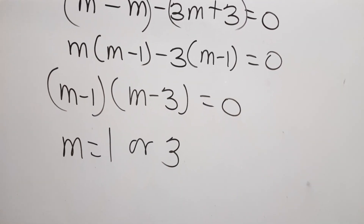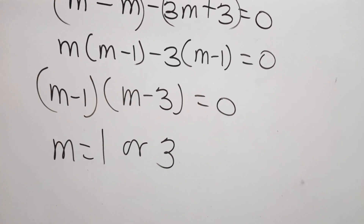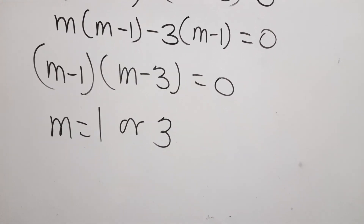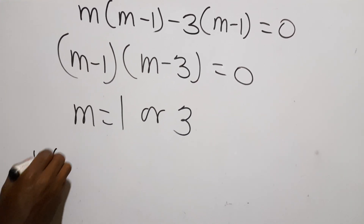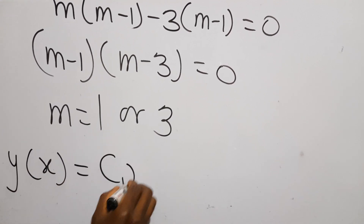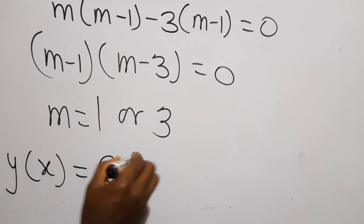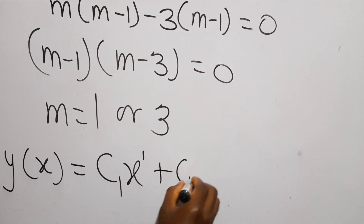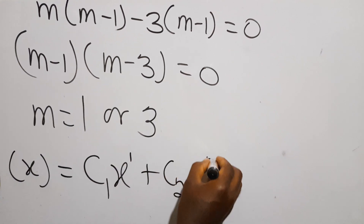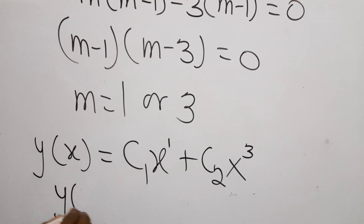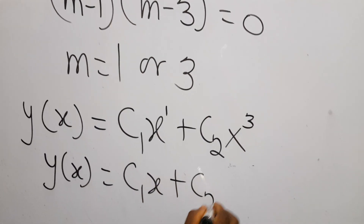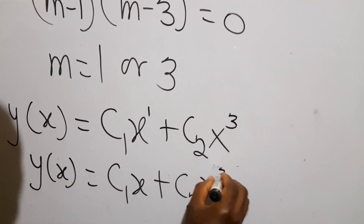Since m equals 1 and m equals 3 are two distinct roots, the general solution to our differential equation is y(x) equals c1·x^1 plus c2·x^3, which can be rewritten as y(x) equals c1·x plus c2·x cubed.